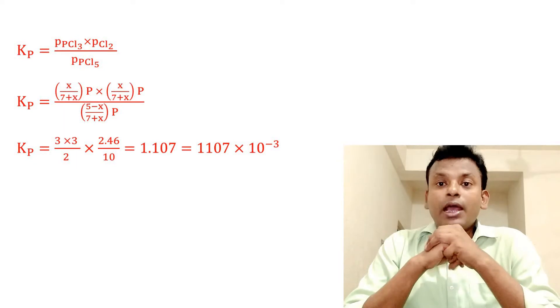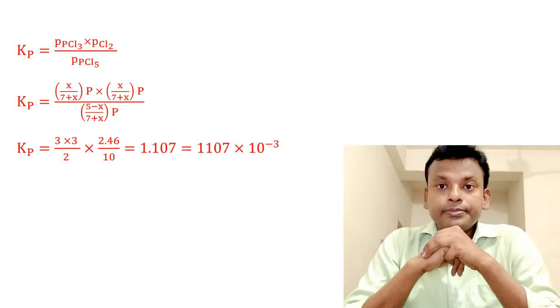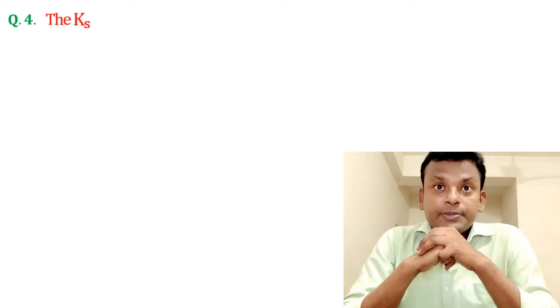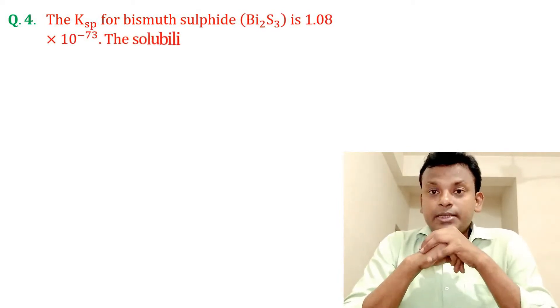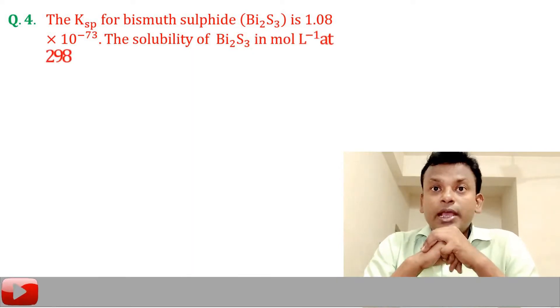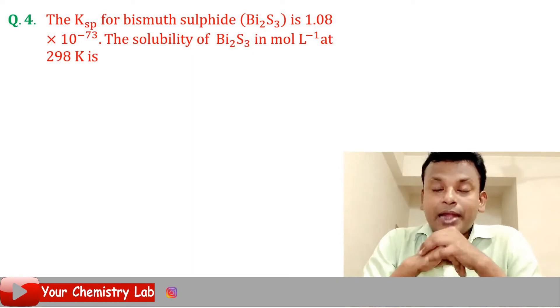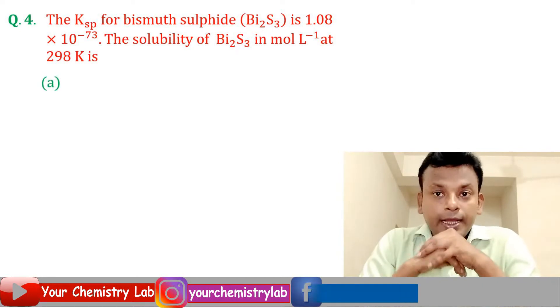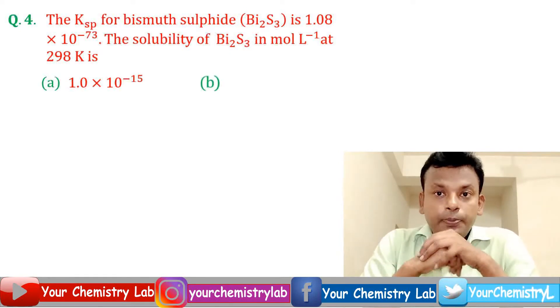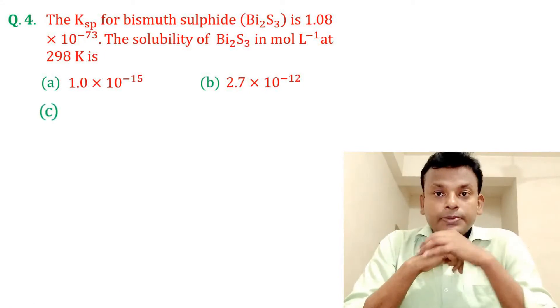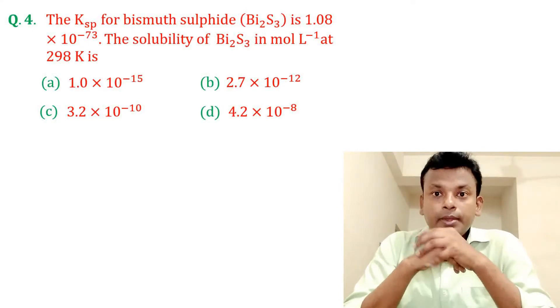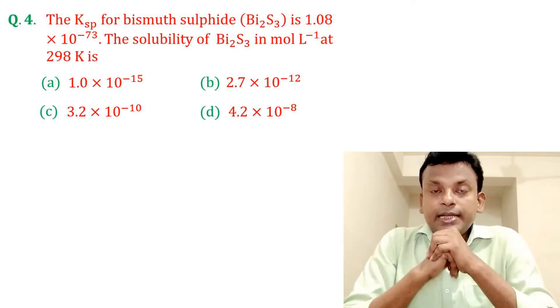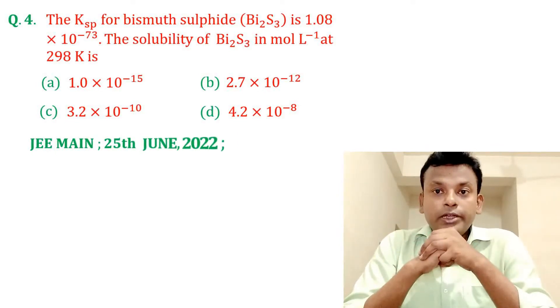Question four: the Ksp of bismuth sulfide Bi2S3 is 1.08 times 10 to the power minus 73. The solubility of Bi2S3 in moles per liter at 298 Kelvin is which option? Options A, B, C, and D are given. This question was set in JEE Main 25th June 2022 evening shift.